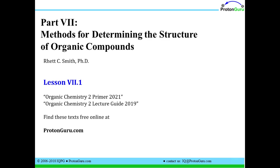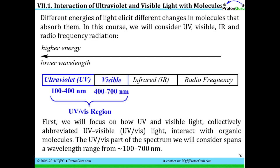Welcome back everyone. I'm Professor Rhett Smith, and today we're talking about lessons 7.1 and 7.2 in the Organic Chemistry II primer. These lessons are concerned with ultraviolet visible spectroscopy. Section 7 of the primer has to do with different types of characterization techniques for organic molecules, and since in section 4 we're talking about all these pi-conjugated systems, I want to talk about ultraviolet and visible spectroscopy, a technique used in particular to study pi-conjugated systems.